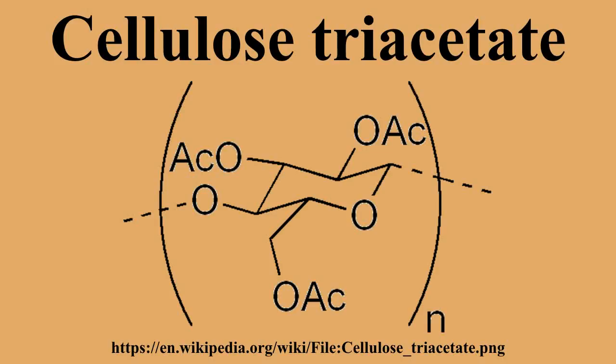Cellulose triacetate, also known simply as triacetate, CTA and TAC, is a chemical compound manufactured from cellulose in a source of acetate esters, typically acetic anhydride. Triacetate is typically used for the creation of fibers and film base.